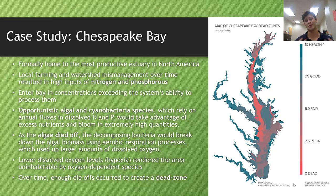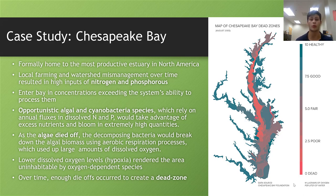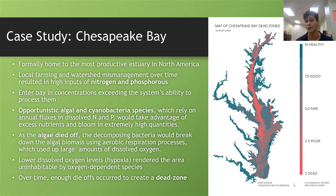The Chesapeake Bay was formerly home to the most productive estuary in North America, thriving with hundreds of thousands of different fish, oysters, and diverse species. However, local farming and watershed mismanagement over time resulted in very high inputs of nitrogen and phosphorus, artificially increasing the nutrients coming into the system. Opportunistic algae and cyanobacteria, which rely on annual fluxes of nitrogen and phosphorus, took advantage of the excess nutrients to bloom in extraordinarily high quantities, just like the eutrophication example we just discussed.